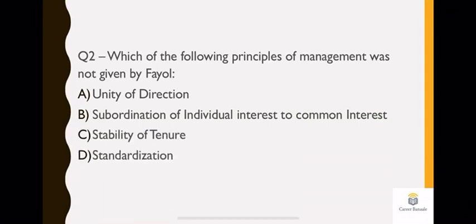Now you need to tell which option was not given by Fayol. The first option is unity of direction. Second is subordination of individual interest to common interest. Third option is stability of tenure. And fourth is standardization. It's very clear. The option is fourth which is standardization. Because only standardization was not mentioned by Fayol. So your answer is D which is standardization.